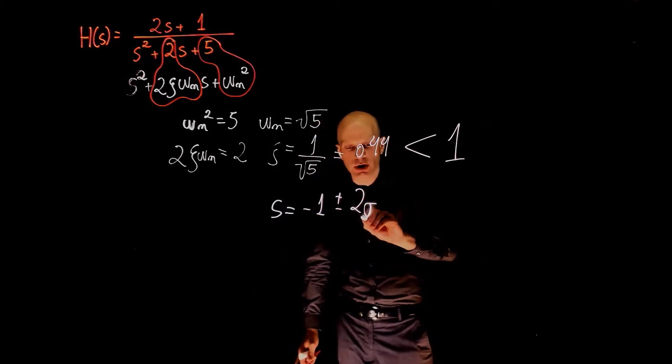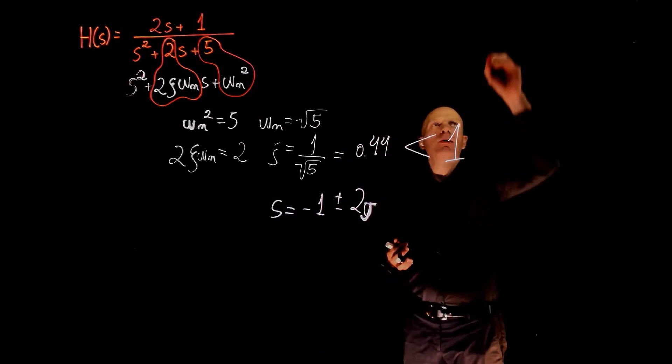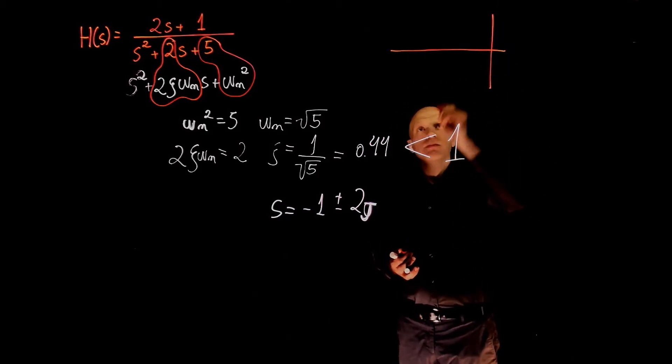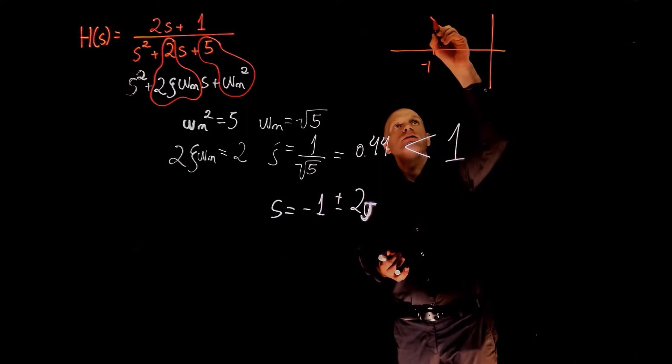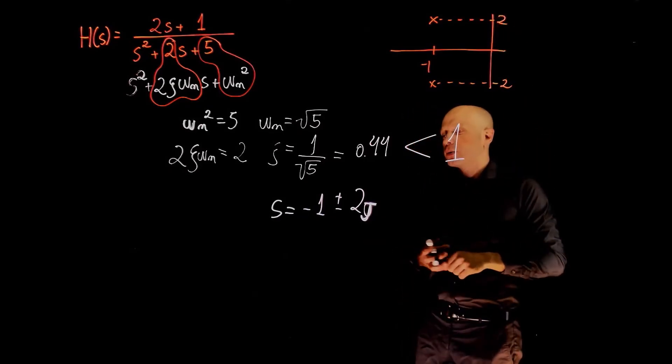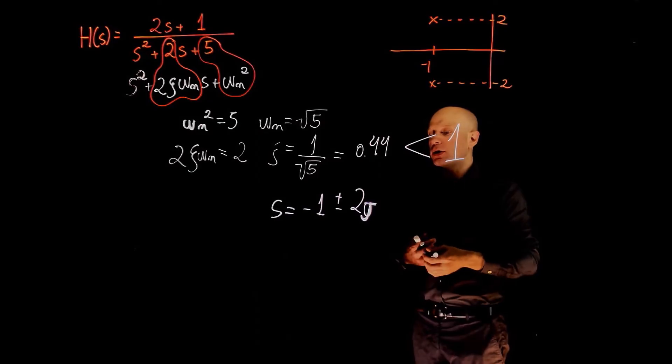This is j. If you now plot the location of the poles in the s-plane, we have negative 1, negative 2, and positive 2. We see that the poles now have both imaginary and real components.